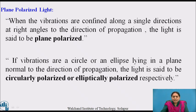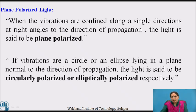Depending upon the locus of the wave, light may exhibit three different states of polarization: plane or linear polarization, elliptical polarization, and circular polarization.